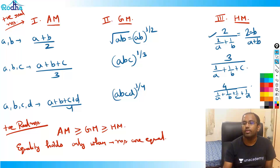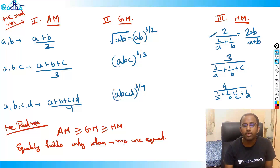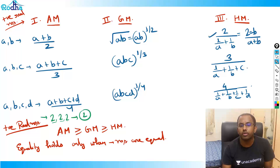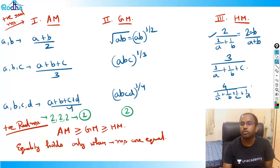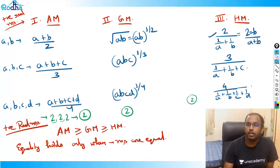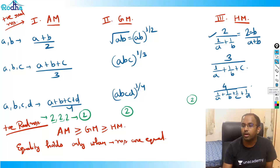For example, for three numbers 2, 2, and 2: their AM is (2+2+2)/3 = 2. Their GM is the cube root of (2×2×2) = 2. Their HM is also 2. So when all numbers are equal, AM = GM = HM. That's the meaning of equality in the AM ≥ GM ≥ HM relationship. After this introduction, we'll see questions on it.